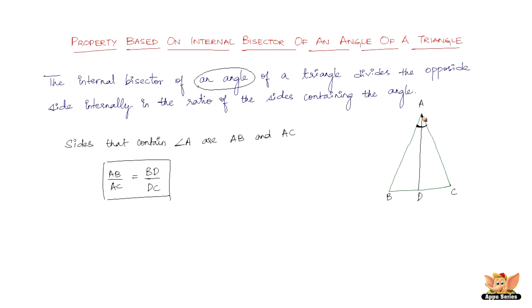So whatever ratio these sides are forming — AB/AC — that's the ratio in which BC is going to get divided, expressed as BD/DC. That's what this statement says.